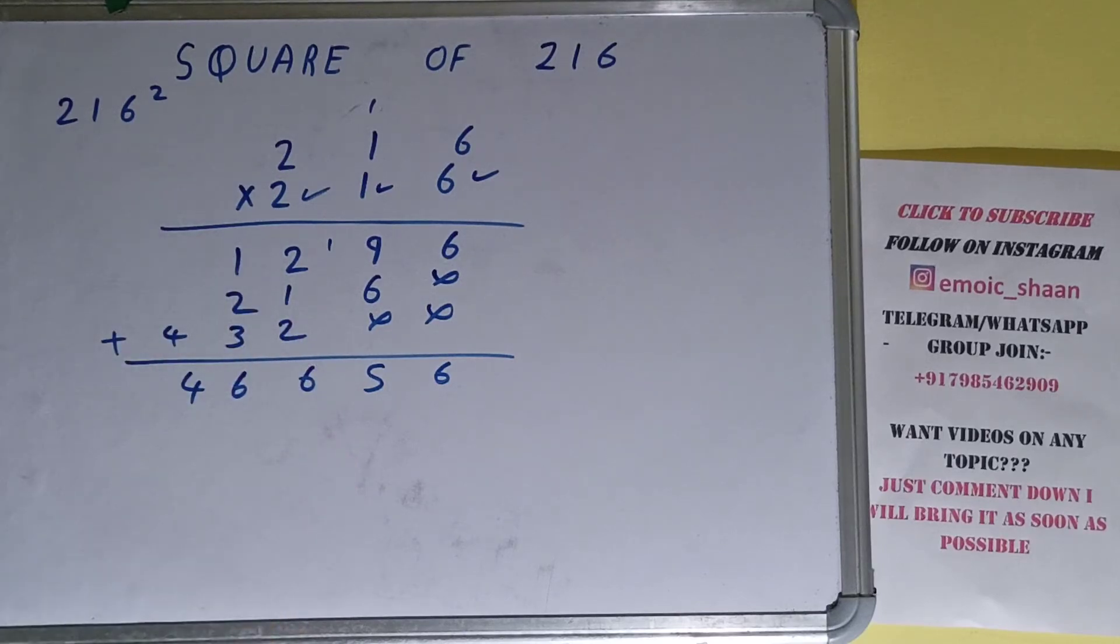And this will be 4. So the answer will be 46656 - that will be the square of the number 216. So this is all. If you found the video helpful, please hit the like button, do consider subscribing, and thanks for watching.